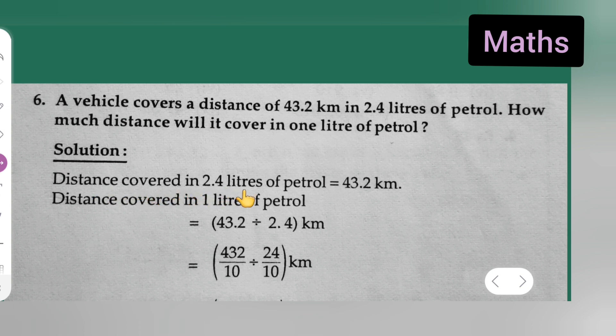Now distance covered in 2.4 litres of petrol is equal to 43.2 km. So, 2.4 litres of petrol equals 43.2 km, the distance.